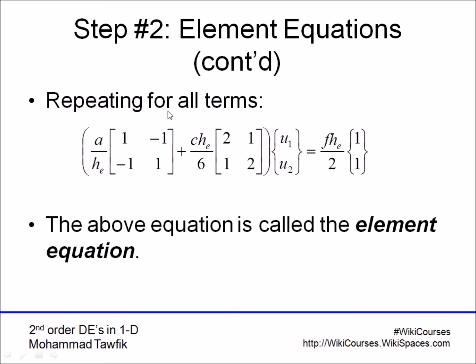as this term resulting from the second derivative, d2u by dx2, and this term resulting from the zero derivative, or u, and all will be multiplied by u1 over u2.